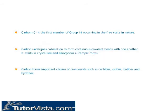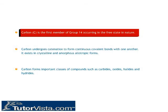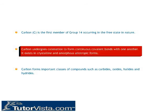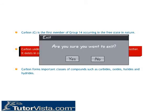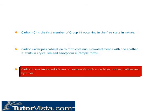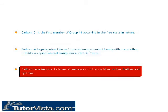Carbon (C) is the first member of group 14, occurring in the free state in nature. Carbon undergoes catenation to form continuous covalent bonds with one another. It exists in crystalline and amorphous allotropic forms. Carbon forms important classes of compounds such as carbides, oxides, halides and hydrides.